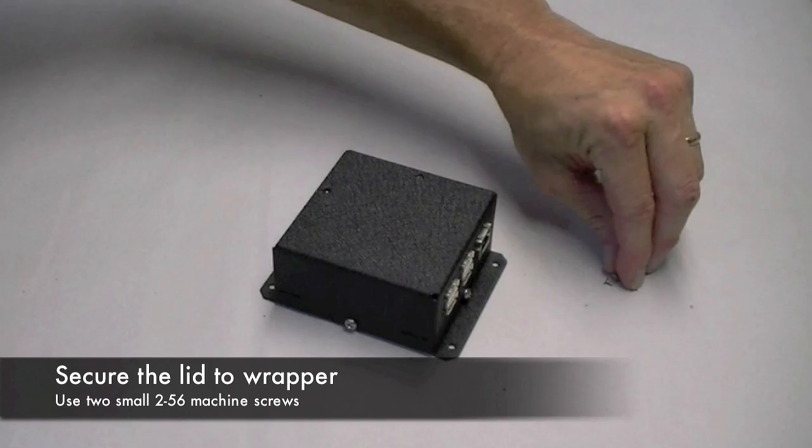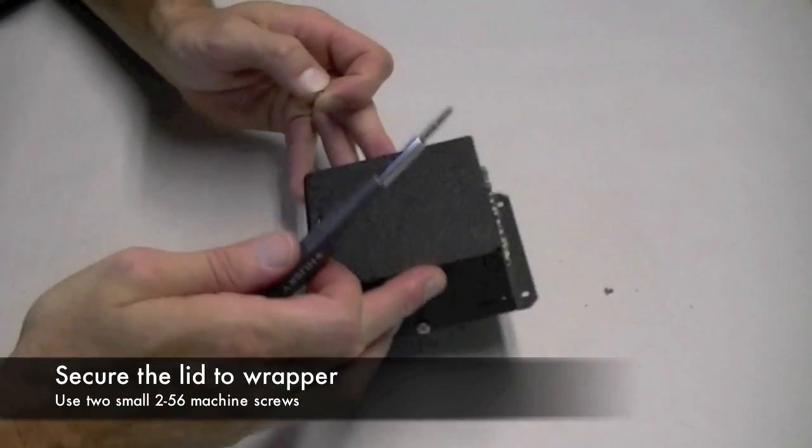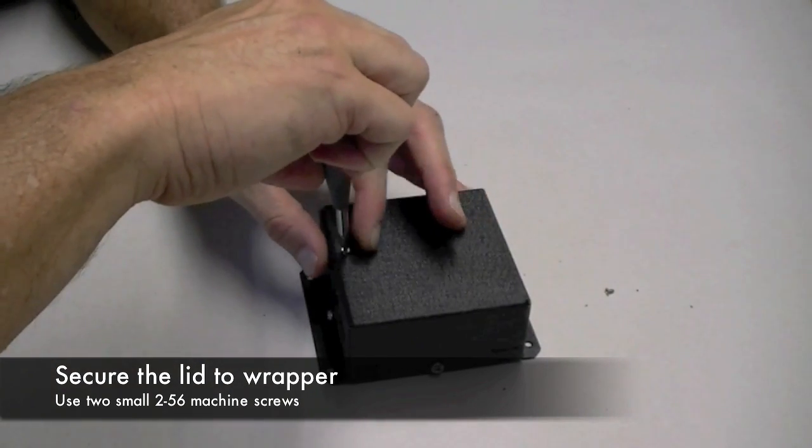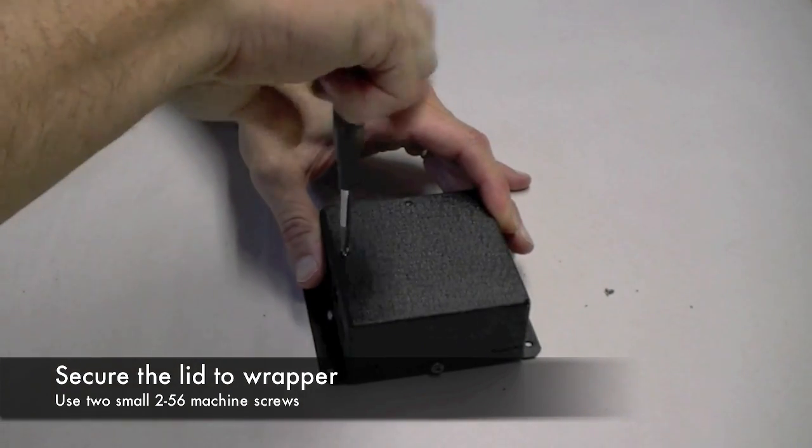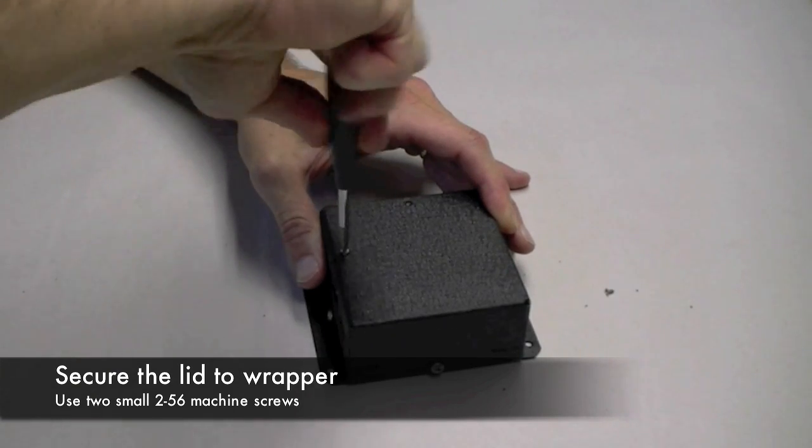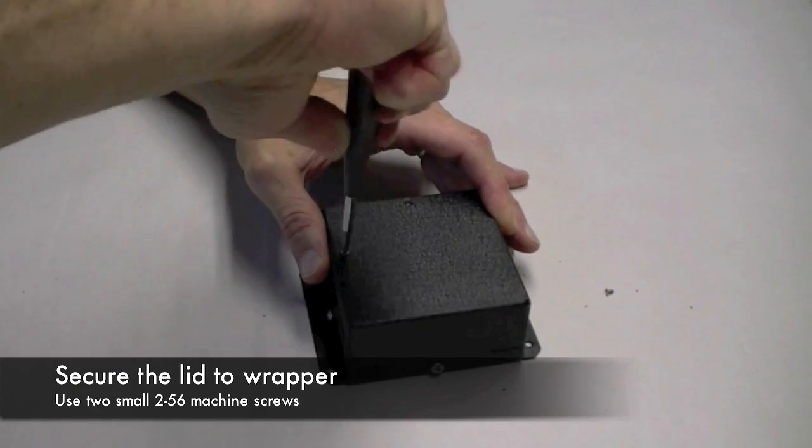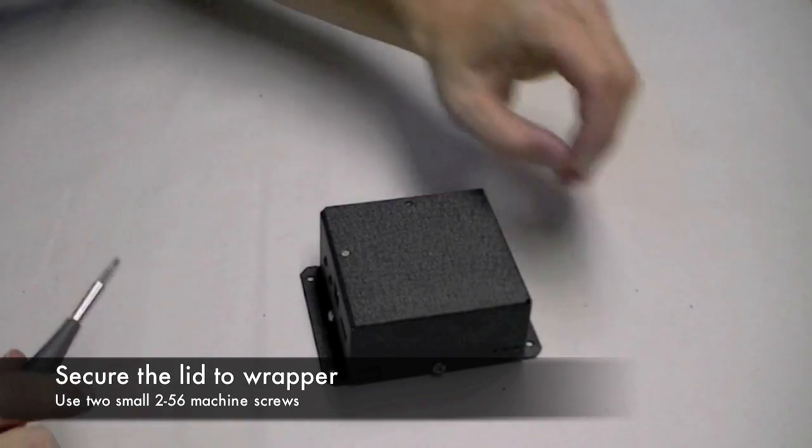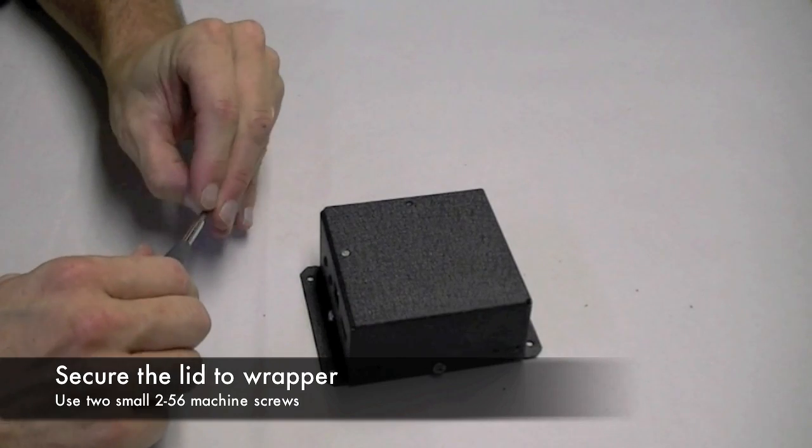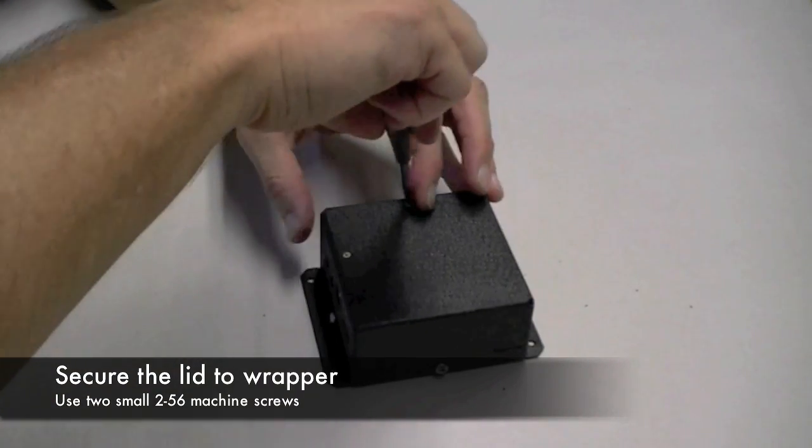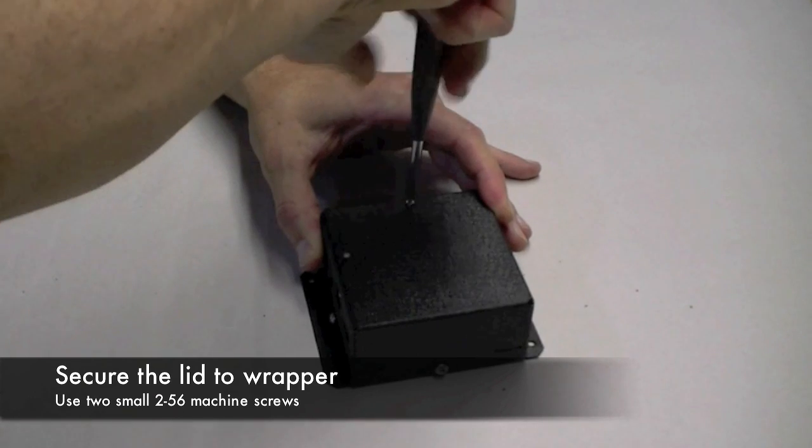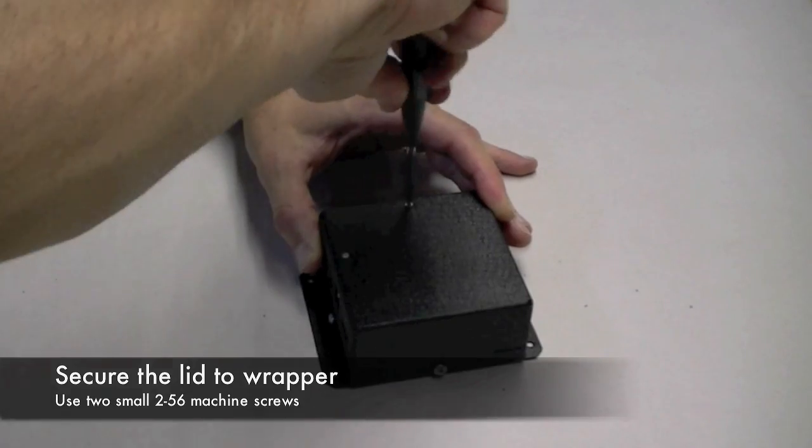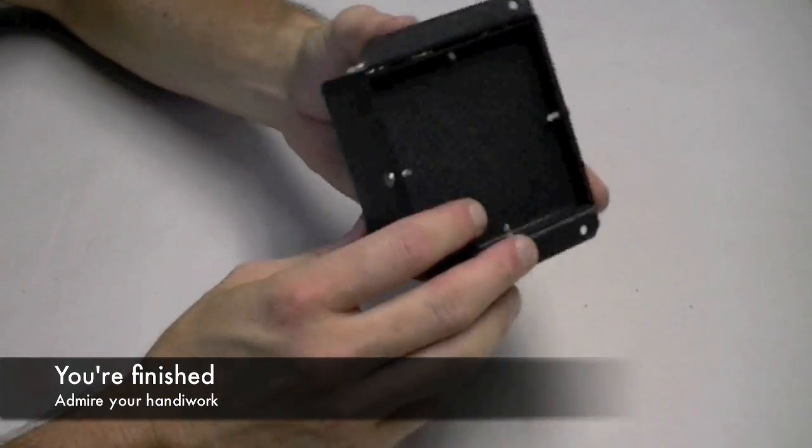So the last piece is to take two small 256 machine screws and fasten the lid with the wrapper. You'll use the small Phillips screwdriver for this. Once you've screwed in the top two, you're finished.